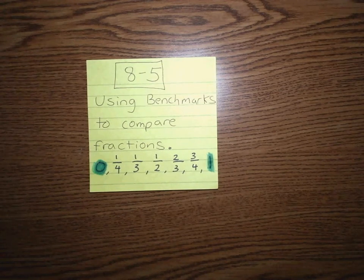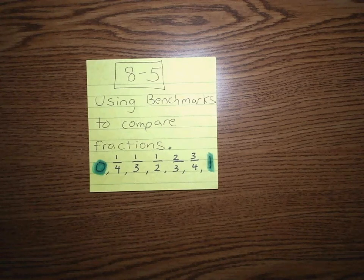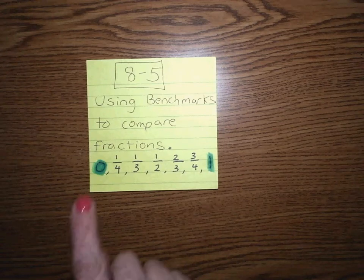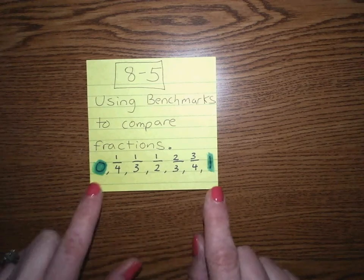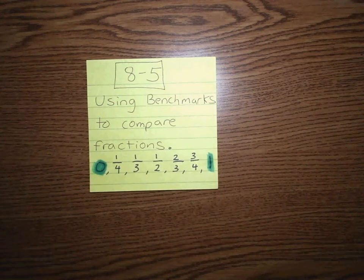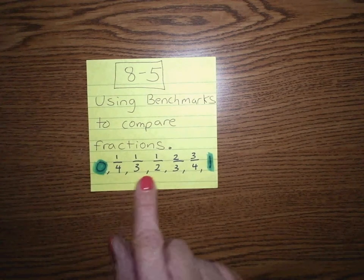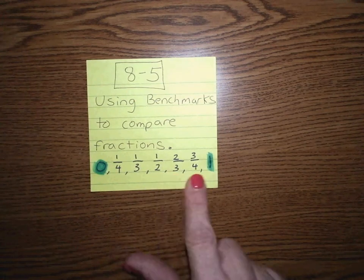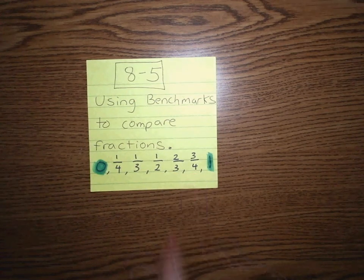A benchmark is just a known fraction or a commonly used fraction that is used for estimating. We can always use 0 and 1 as benchmarks as well, and then some common benchmark fractions are one-fourth, one-third, one-half, two-thirds, and three-fourths.